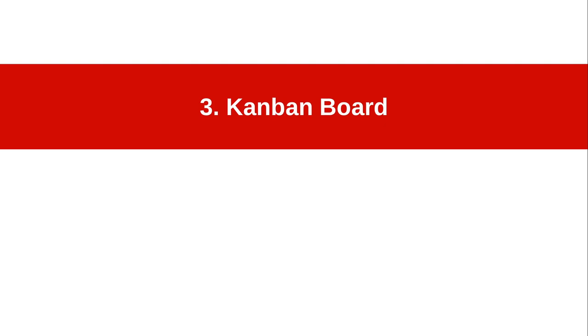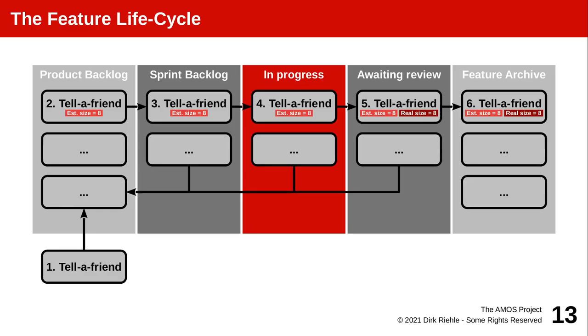One feature does not make a software — many features make a software: hundreds, thousands, tens of thousands of features. So we need a process and a tool to organize this stream of features that is to be implemented, and that tool is the Kanban board. The Kanban board is used to structure that stream of features. Let's first look at the life cycle of a single feature before we look at many features — the life cycle of a single feature goes through multiple stages.